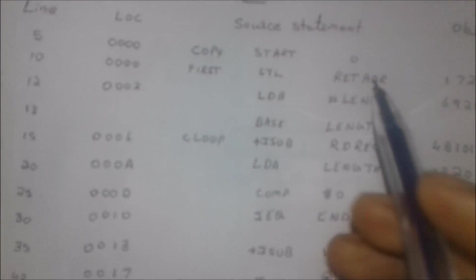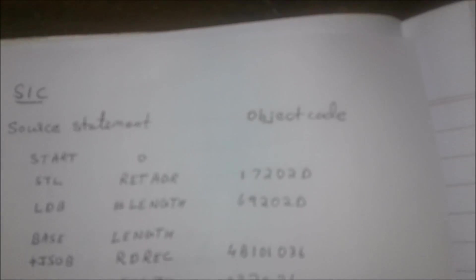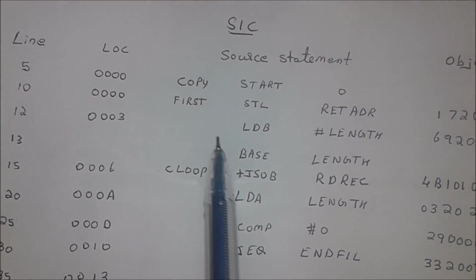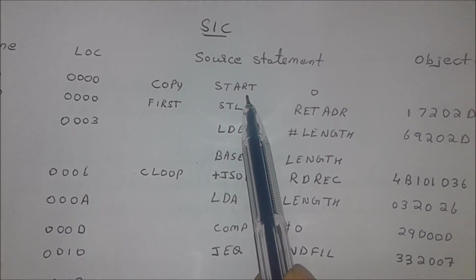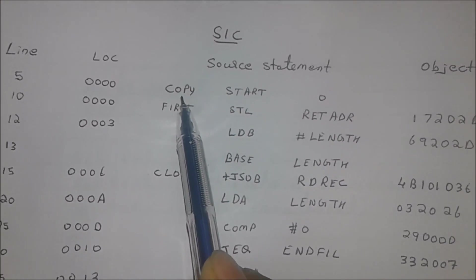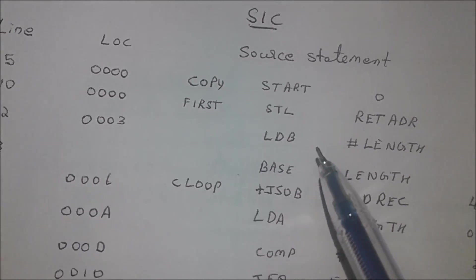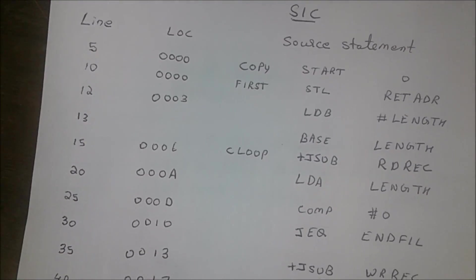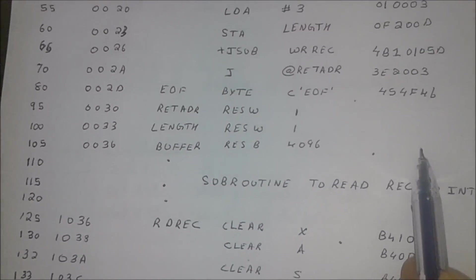Here we see that there is a location — the location where statements are stored. These are source statements, and these are object codes corresponding to the location. We see a start statement; the start statement tells where the program starts. There is something before start — this is called the name of the object program. We go on writing like this till the end.